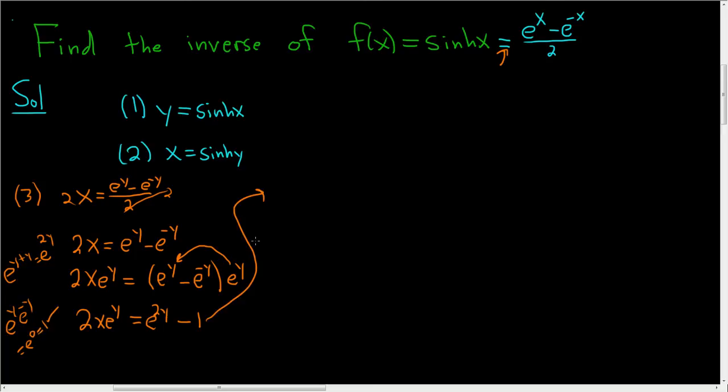Let's rewrite this as follows. So we have e^(2y). We'll subtract this, so put it on this side. So minus 2x·e^y, and then we still have the minus 1, and this is equal to 0. Let's think about it this way. This is (e^y)^2, 2 times y is 2y, minus 2x·e^y minus 1 equals 0.